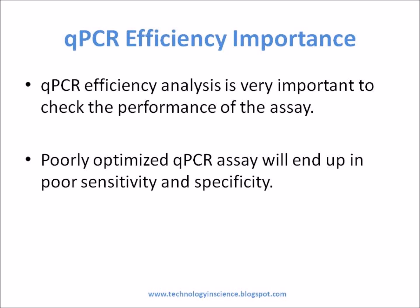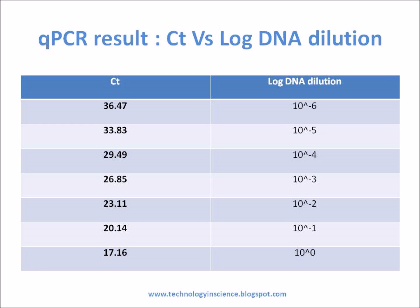A standard curve can be generated using a tenfold dilution of a template amplified on a real-time system. Each dilution can be assayed in triplicate. Below are the data generated after a real-time PCR run. The template used for this purpose can be a target with known concentration, for example, nanograms of genomic DNA or copies of plasmid DNA, or a sample of unknown quantity. Here, plasmid is used as the template for the reaction.